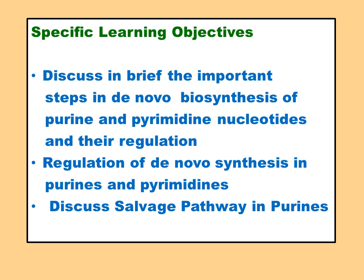The specific learning objectives: at the end of this session, the learner shall be able to discuss the steps in the de novo biosynthesis of purines and pyrimidines nucleotides, along with the regulation of de novo synthesis, and also discuss the salvage pathway in purines. There shall also be reference to the de novo synthesis and salvage pathway of pyrimidines.